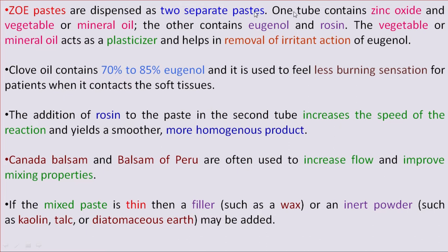Zinc Oxide Eugenol paste is dispensed as two separate pastes. One tube contains Zinc Oxide and vegetable or mineral oil, and the other contains Eugenol and Rosin. The vegetable or mineral oil acts as a plasticizer and helps remove the irritant action of Eugenol, which has an irritant effect when used in Zinc Oxide Eugenol cement.